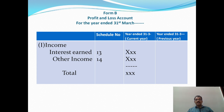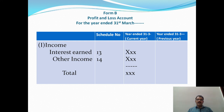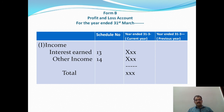The schedule number will be specified for each figure. The first section is Income, which has two items. The first is Interest Earned, which is Schedule 13, and the second is Other Income, which is Schedule 14. The total of these two items gives Total Income.